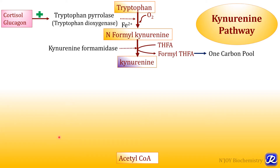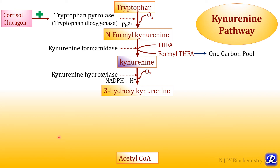Tryptophan pyrolase is activated by two hormones — cortisol and glucagon — in the liver. The next step is catalyzed by kynurenine formamidase. In this reaction kynurenine is formed from N-formyl kynurenine, and during this reaction tetrahydrofolate is converted to formyl tetrahydrofolate, which contributes to the one carbon pool. The next reaction is catalyzed by kynurenine hydroxylase and also requires NADPH.